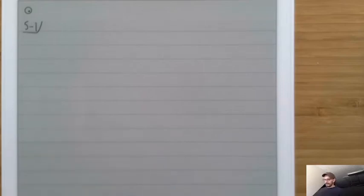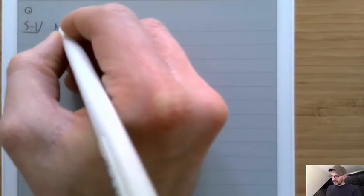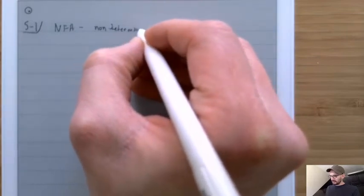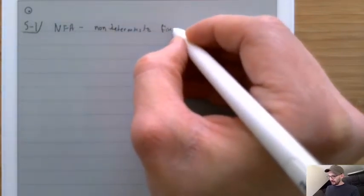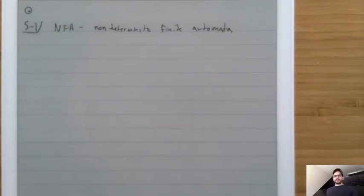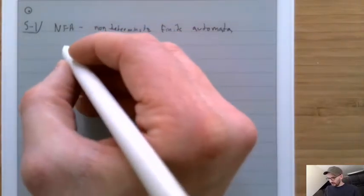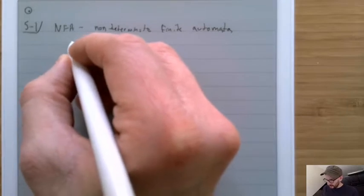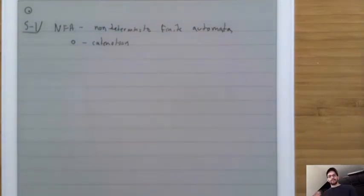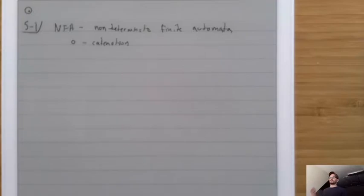We're going to look at a new kind of automata called an NFA, or Non-Deterministic Finite Automata. These are going to be used to help us show that we can do the circ operation — concatenation — on machines. They're allowing us to increase the level of expressiveness that we have in our way of writing down automata.